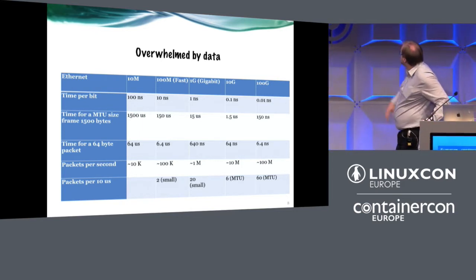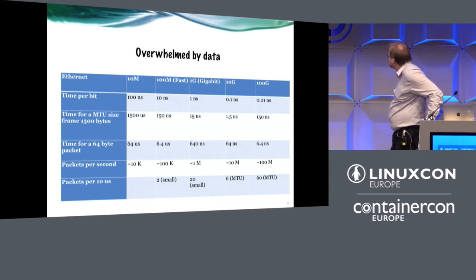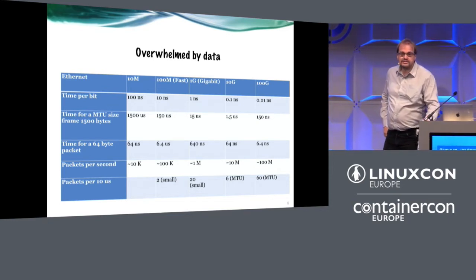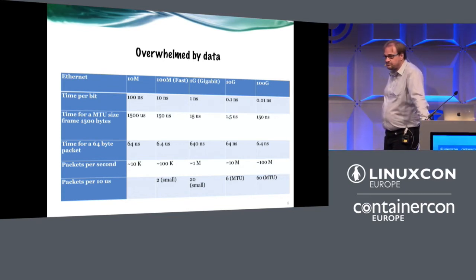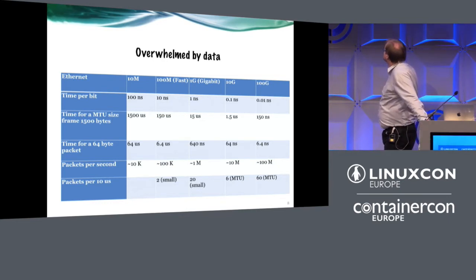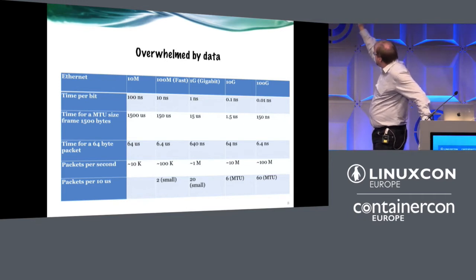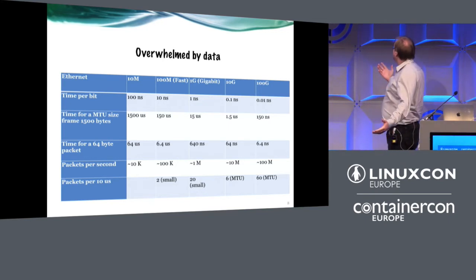At 1 gig, it's one nanosecond per bit, and a 64-byte packet takes 640 nanoseconds. You can receive a million packets per second, and in a 10 microsecond frame you can receive 20 small packets. The kernel and network stack is not able to process this anymore. If you send a large number of small packets to Linux, you will cause an overrun and the system can't handle it, or you get into high latency mode. With 1 gig, we can usually buffer this for small packets, and with 1500-byte packets there's still 15 microseconds to process — which is good enough.